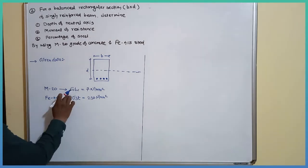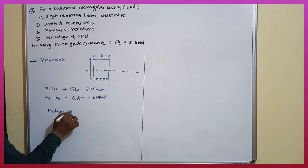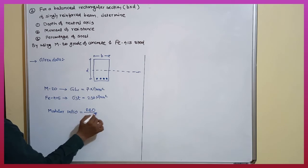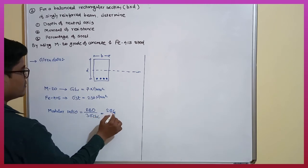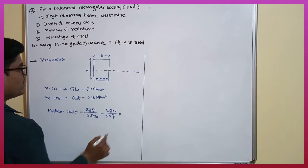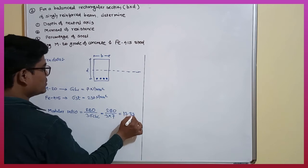By using σ_cbc, we can calculate the modular ratio. m is equal to 280 divided by 3·σ_cbc, so 280 divided by 3×7, which gives 13.33.